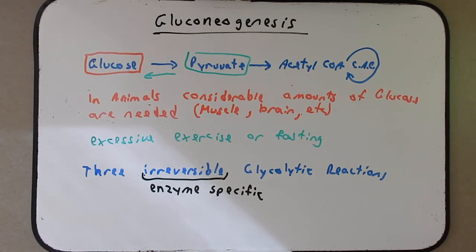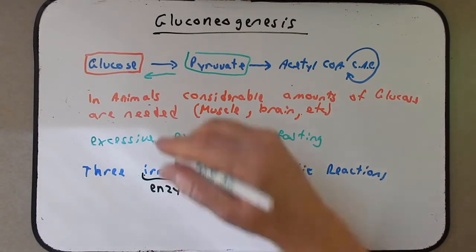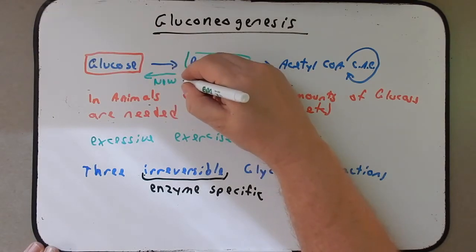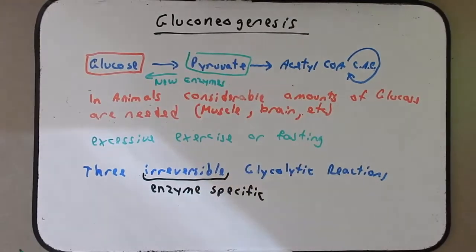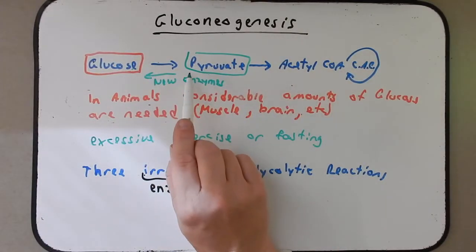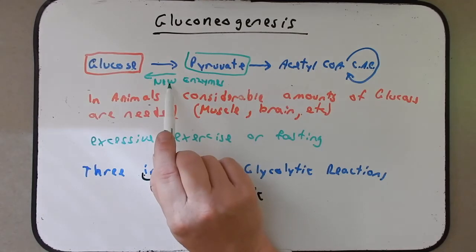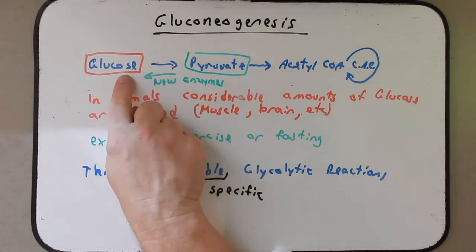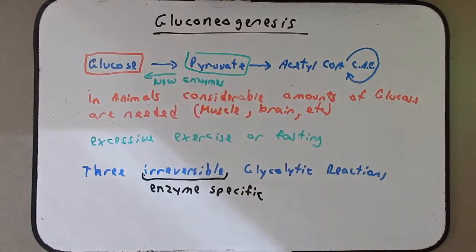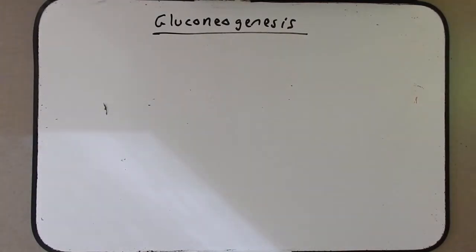So how does gluconeogenesis work? It works because we use different enzymes, enzymes specific for just gluconeogenesis. We don't use the enzymes going from glucose to pyruvate. We use three new enzymes going from pyruvate back to glucose to overcome these irreversible glycolytic reactions. Now the question that might come to your mind is, how does the cell know to go from glucose to pyruvate or from pyruvate to glucose?